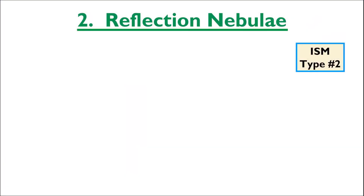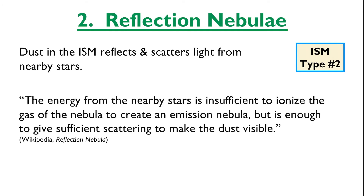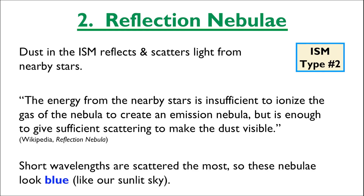The second type of interstellar medium is called a reflection nebula. The dust in the ISM can reflect and scatter light from nearby stars. In the case of a reflection nebula, the energy from nearby stars is not enough to fully ionize the gases to create emission nebulae, but it is enough to give sufficient scattering to make this dust visible. Of the various wavelengths of light that can get scattered, the shorter wavelengths are scattered the most, so we see these nebulae looking very blue, much like our daytime skies.